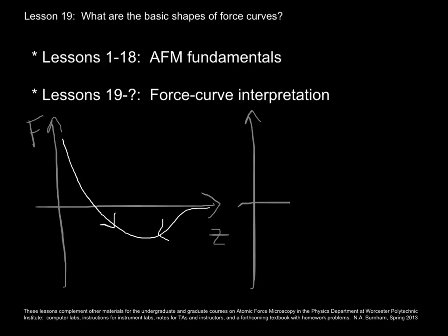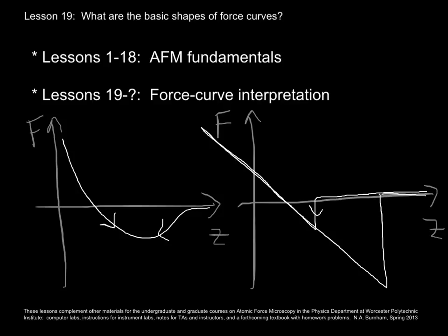The other basic shape, again we have axes, force as a function of scanner position. The other basic shape is you reduce the distance between the tip and the sample, nothing much happens, and then there's a dramatic jump. And then you load up, and then you separate, and then you pull and pull and pull, and finally there's a separation, and the data look very different.